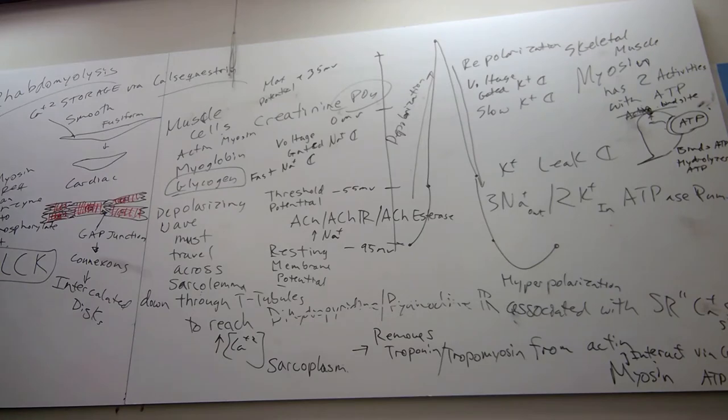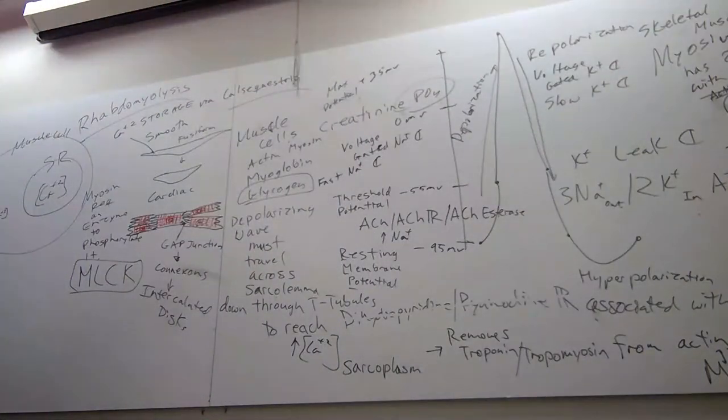So if this is my sarcoplasmic reticulum, and I have this really large calcium concentration in it, and it's inside a muscle cell that has a small amount of calcium, how the hell am I going to get that small amount of calcium back into that SR?